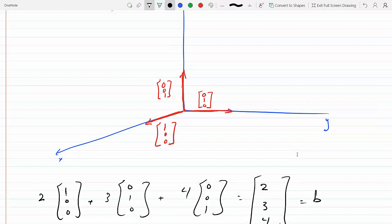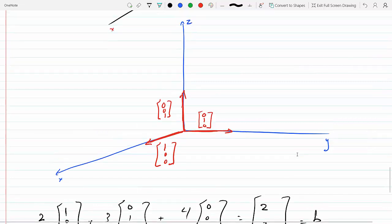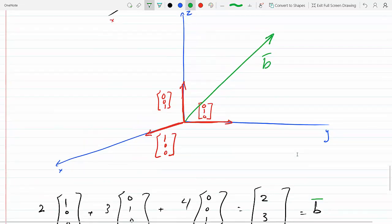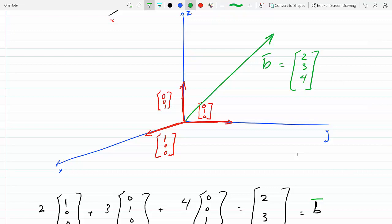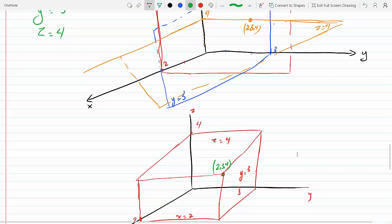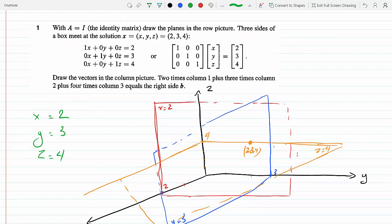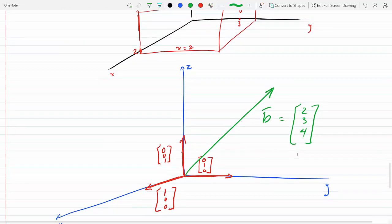So vector b will be somewhere here: (2, 3, 4). That does it. Let's go.